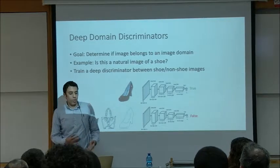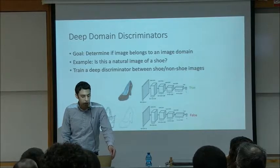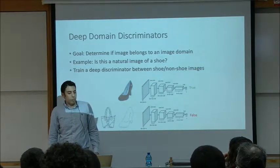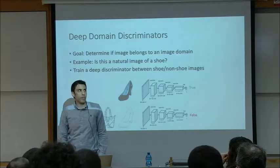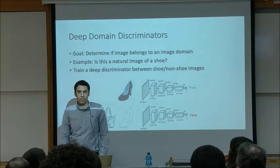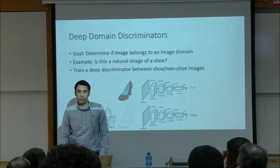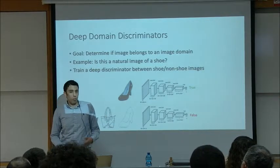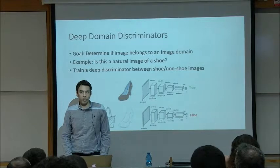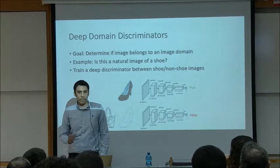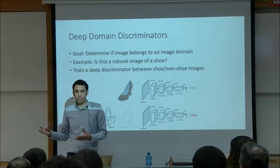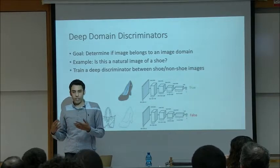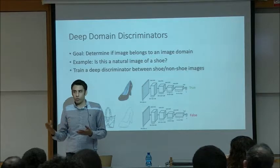To understand what prior art does, let's briefly overview adversarial methods, starting with domain discriminators. The goal is to determine if a certain image belongs to a specific image domain — for example, does this image contain a natural image of a shoe? One solution is to train a deep discriminator to say whether a certain image contains a shoe or not, trained on images of shoes and images of non-shoes.